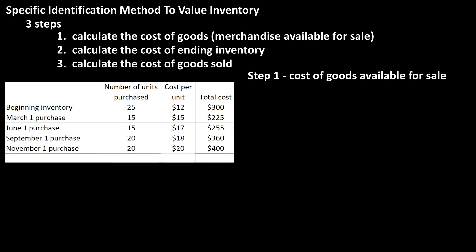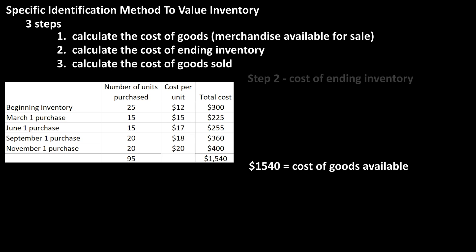They then made the following purchases of units at the beginning of June, September, and November, with the cost per unit and total costs listed in this table. If we sum up the number of units purchased, we get 95, and if we sum up the total cost column, we have $1,540. This total is the cost of goods available for sale, which answers the first step.